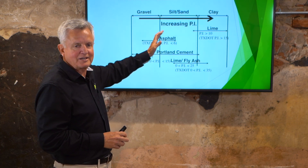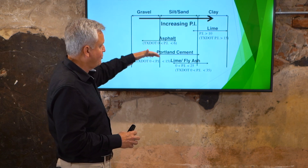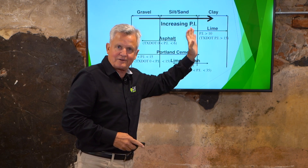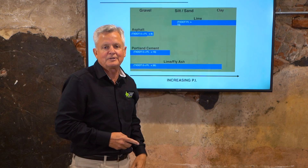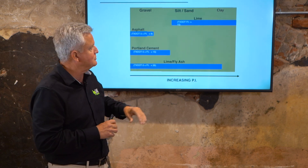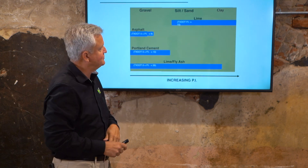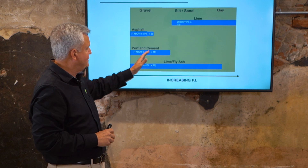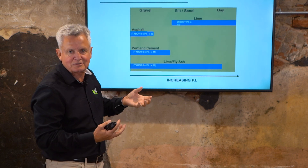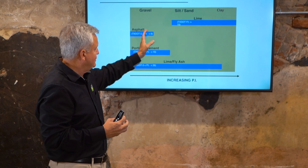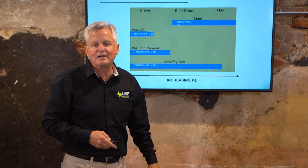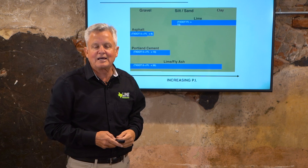For coarse-grained materials like sand or gravel, you can use asphalt or portland cement to glue particles together. But for really fine-grained clays with high PI, you want to use lime. TxDOT's recommendation is: PI above 15, use lime; PI less than 15 in a sandy soil, use portland cement; for gravel stabilized base, asphalt is typical at PI less than 6. As PI increases, lime becomes the right choice.